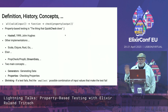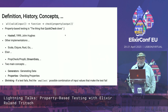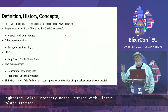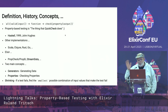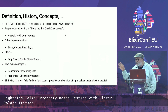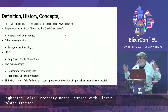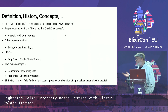Property-based testing is not new. It was invented a very long time ago, and the most famous implementation is by a very famous computer scientist called John Hughes, from 1999, in Haskell — and it's called QuickCheck. There are other implementations of property-based testing frameworks, QuickCheck-like, for Scala, Clojure, Rust, Go, and also for Elixir. The two big ones for Elixir are PropCheck, which is a wrapper around PropEr — the property-based testing framework for Erlang — and then there is also StreamData by Andrea Leopardi.